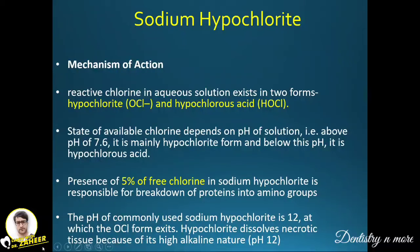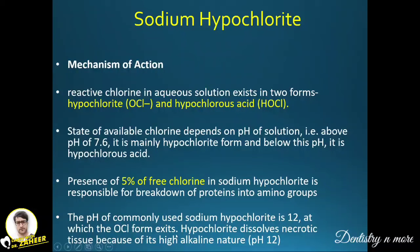The mechanism of action of sodium hypochlorite: reactive chlorine in aqueous solution exists in two forms — hypochlorite (OCl⁻) and hypochlorous acid (HOCl). The state of available chlorine depends on the pH of the solution. Above pH 7.6 it is mainly the OCl⁻ form, and below that pH it is mainly HOCl. The high percentage of free chlorine in sodium hypochlorite is responsible for breakdown of proteins into amino acids. The pH of commonly used sodium hypochlorite is 12, at which the OCl⁻ form exists and dissolves necrotic tissue due to its high alkaline nature.